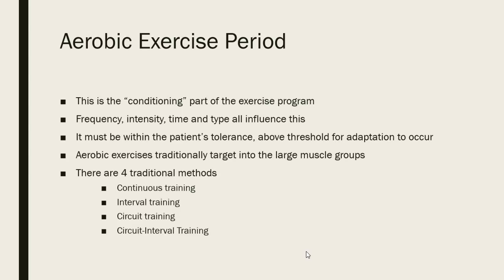After the warm-up, we have the aerobic exercise period — the conditioning part of the exercise program. We have to think about frequency, how often they would do this, and how intense the exercise would be — perhaps thinking of maximum heart rate minus age, then 70% of that, or using a Borg scale. The time and type all influence this: is it an aerobic bicycle ride, a walk on the treadmill, an elliptical? There are a number of different things that would still challenge the aerobic system. Aerobic exercises traditionally target the large muscle groups — the glutes, quads, hamstrings.